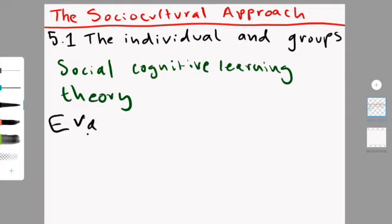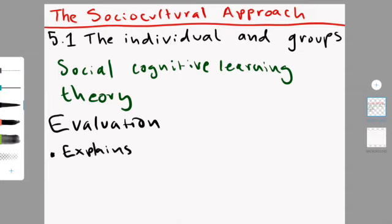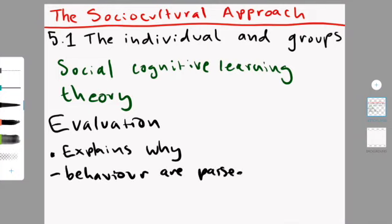An evaluation of the social cognitive learning theory. So the theory helps us explain why behaviors may be passed down in families or within a culture. Because, obviously, those children observe those behaviors and then learn them. It also helps explain why a child can acquire some behavior without trial and error learning. So they just randomly out of nowhere do this, for instance.